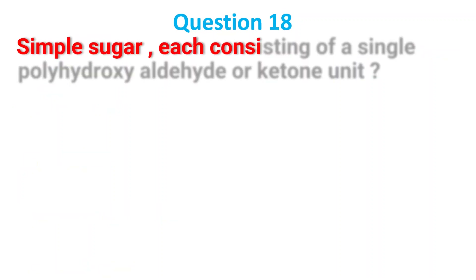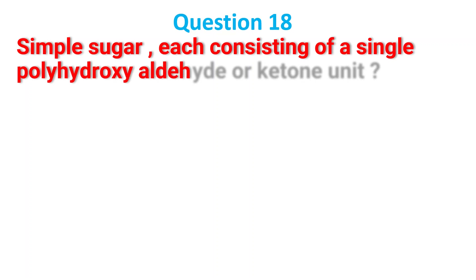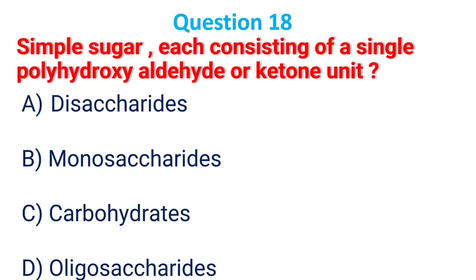Simple sugars, each consisting of a single polyhydroxy aldehyde or ketone unit: A. Disaccharide; B. Monosaccharide; C. Carbohydrate; D. Oligosaccharide. The answer is monosaccharide.